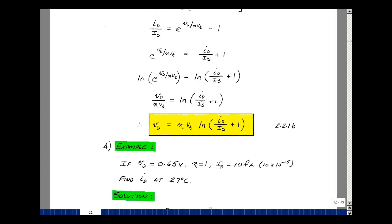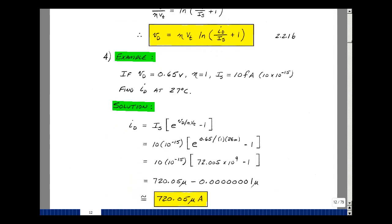Let me do an example to see how some of the numbers play out. Suppose that V_d was 0.65 volts. For silicon, eta is somewhere around 1, between 1 and 2 roughly. I_s, for a semiconductor diode, typically on an integrated circuit, is about 10 femtoamps. That's going to be 10 times 10 to the minus 15th. Could you find I_d at 27 degrees C?